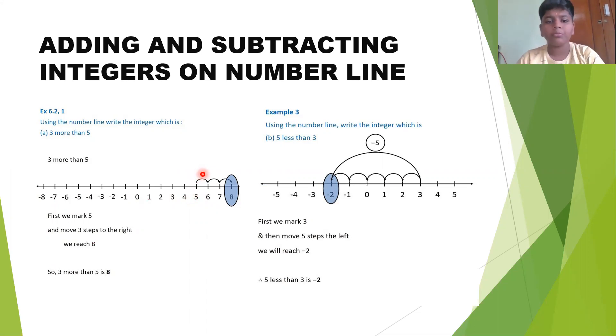If addition is there, we should move forward, and if subtraction, we should come back on the number line. Now here is addition. From 5 we move 3 steps: 1, 2, and 3. The point we finally reach is the correct answer. So 3 more than 5 is 8.